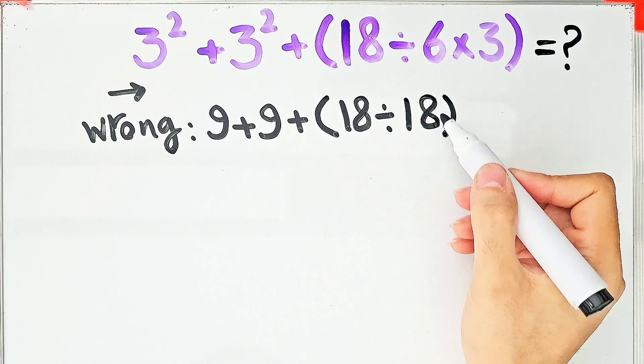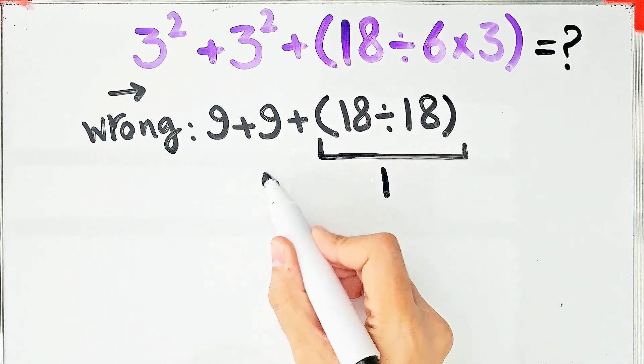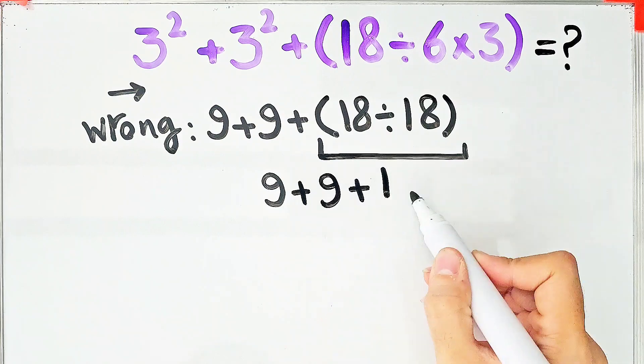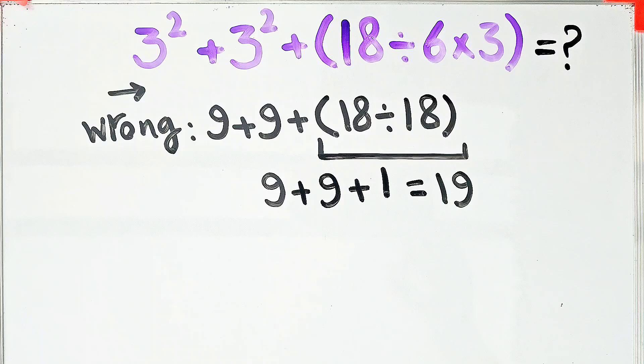After that, they simplify inside the parentheses. 18 divided by 18 equals 1. 9 plus 9 plus 1 equals 19, but this answer is definitely wrong.